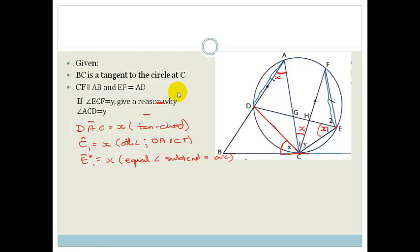Let's look at our next reason. So now they've said, if ECF equals Y, give a reason why ACD would equal Y. Now, if you look very carefully, you can see that they told us that this line is equal to this line. And the rule goes that an angle that is subtended by either an equal arc or an equal chord are equal. Therefore, we can say that angle ACD equals Y because equal angle subtended by equal chords. So therefore, this little angle is Y as well.